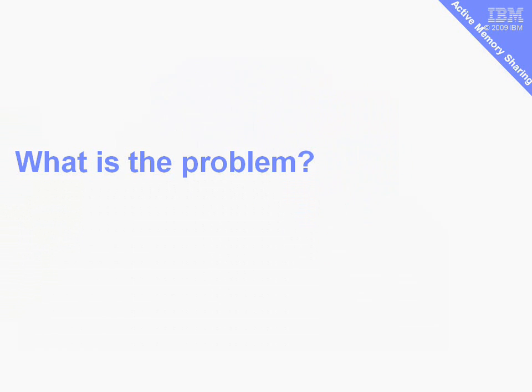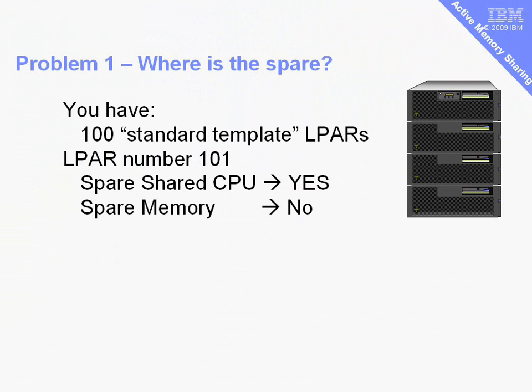I've got three typical scenarios where I've found that AMS would be particularly useful. If you have any of these problems, then you should find AMS useful to you too. The first problem is: where is the spare memory in a machine?